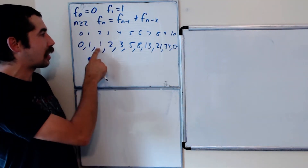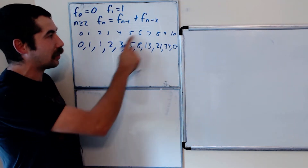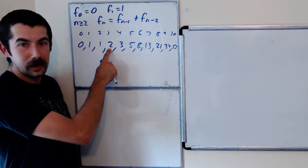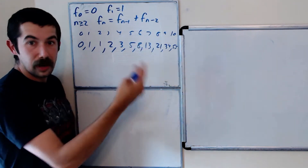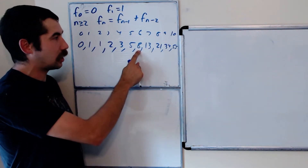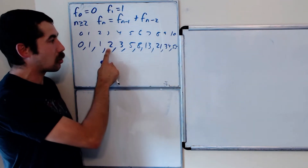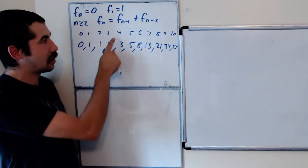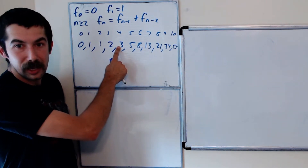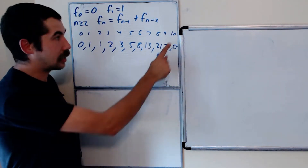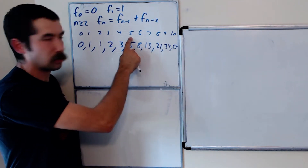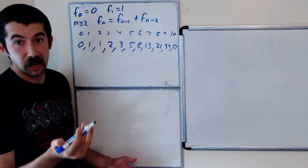Notice: the 2nd Fibonacci number divides all the even-indexed Fibonacci numbers — well, 1 divides everything, so that's boring. The 3rd Fibonacci number, 2, divides all numbers whose indexes are divisible by 3. The 6th and 9th Fibonacci numbers are both divisible by 2. The 8th Fibonacci number, 21, is divisible by the 4th, because 8 is divisible by 4. The 10th Fibonacci, 55, is divisible by the 5th, because 10 is divisible by 5.